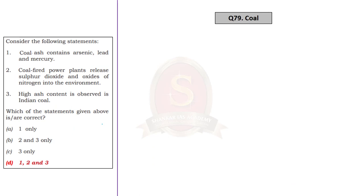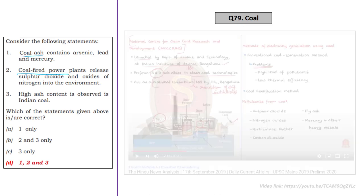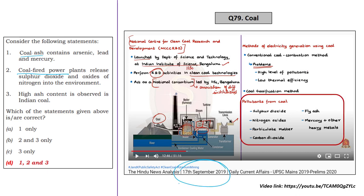The 79th question in Set A talks about coal-fired power plants and coal ash. We covered aspects related to Statements 1 and 2 on 17th September 2019 in the News Analysis. On that day we said that when coal is burnt, several gases and pollutants are emitted, including sulfur dioxide and nitrogen oxides — so Statement 2 is correct, and you can eliminate options A and C. From the remaining options, you only need to determine whether Statement 1 is correct. As part of the gases and pollutants emitted when coal is burnt, we saw that mercury and certain other heavy metals are also emitted. So if you know mercury is emitted, you can say Statement 1 is correct and arrive at the correct answer, Option D — 1, 2, and 3. Even if you don't know Statement 3, you can still arrive at the correct answer.